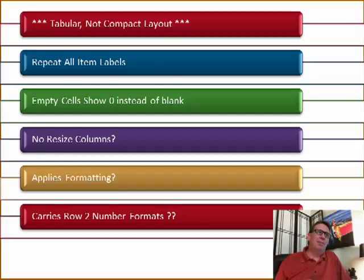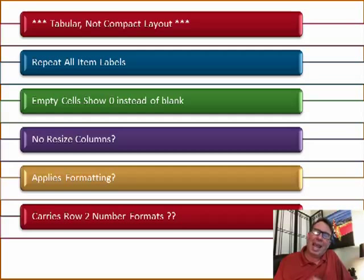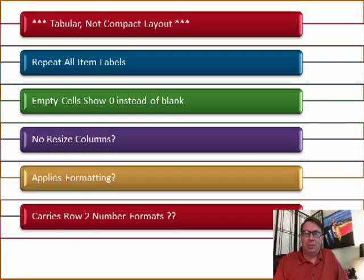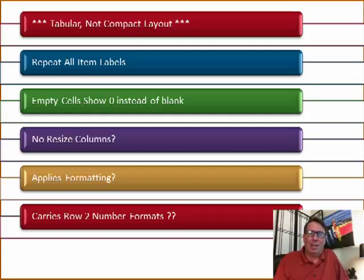Here's what I already have. First of all, the pivot table is going to be created with tabular view, not compact layout. I hate those 2, 3, 4, 5 columns — all fields crammed into column A. Repeat all item labels — certainly if you're in Excel 2010, that was my idea to put that in. Empty cells should show 0 instead of blank. Who cares about blank cells? I always change them back to 0.